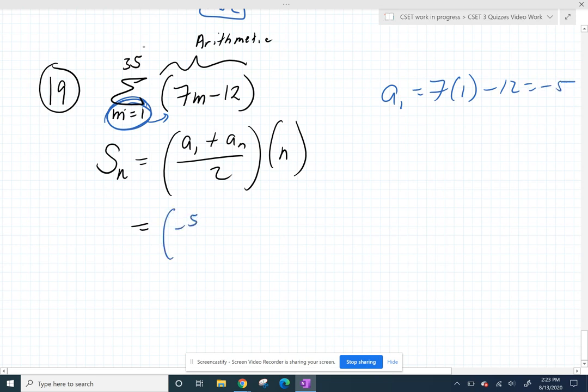And then we can get our last term by plugging in whatever number they have on top. So a sub 35 is 7 times 35 minus 12. And the hardest part for these is just the arithmetic. I'm going to have my calculator help me. That's going to be 233.